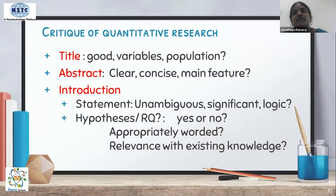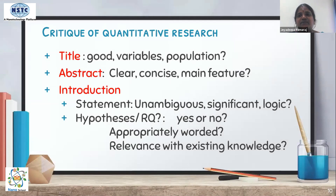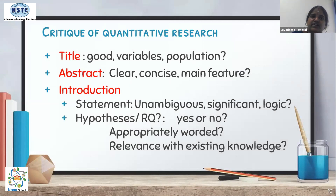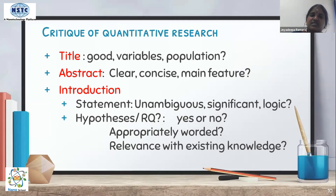Critical review is divided into two parts: qualitative studies and quantitative studies, as the research process differs for each approach. For quantitative studies, the review is done aspect by aspect. First, look at the title — whether it is well-formulated, whether the variables are included, whether the population is included. There is a rule by which a title should be formulated, so check whether all these concepts are present.